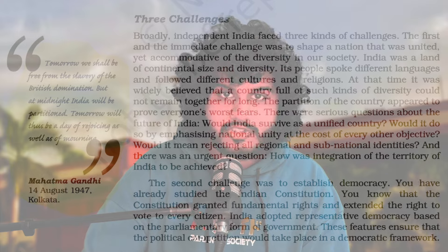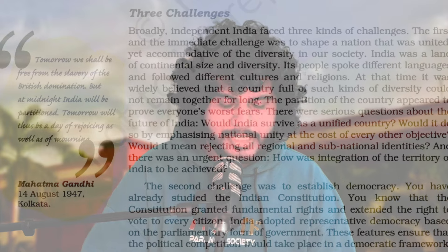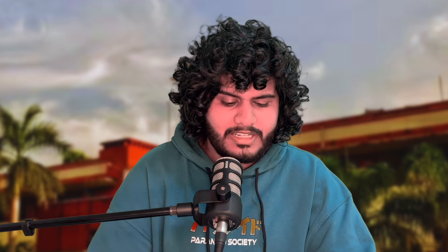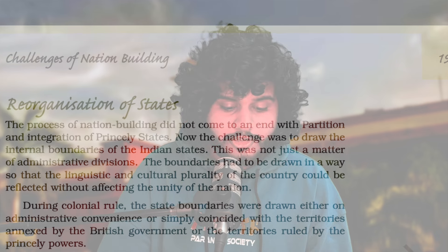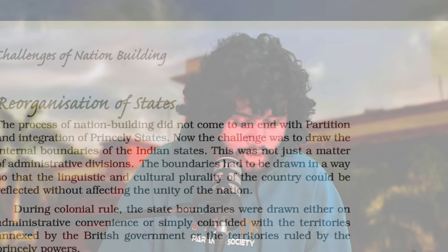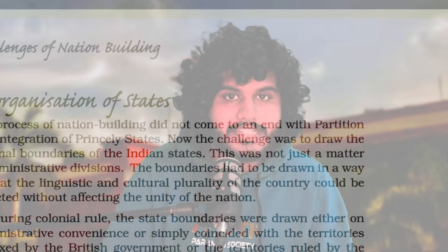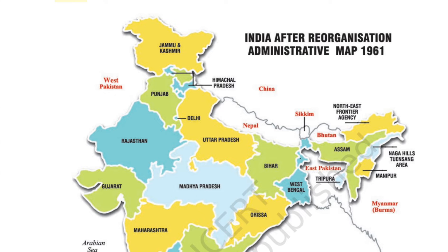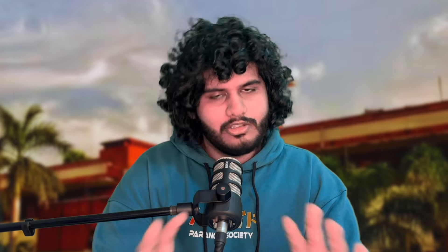In Challenges of Nation Building, focus on the 3 challenges which can become a 4-marker — they're on the first page. Focus on partition and its consequences, which can come as a 6-marker. Hyderabad and Manipur can each be asked in 2, 4, or 1 mark. Reorganization of States is full of 1-mark questions and can also be summarized in a 6-marker. The map on page 20 is very important.